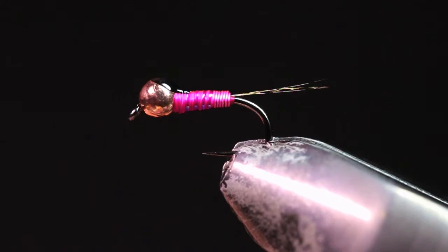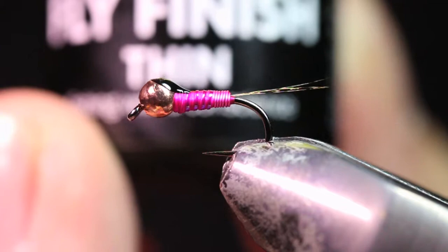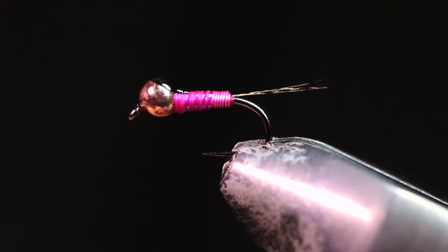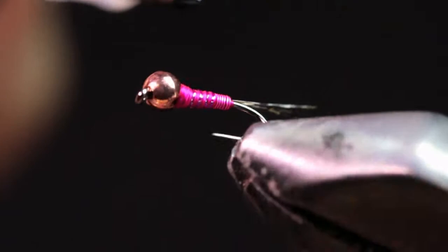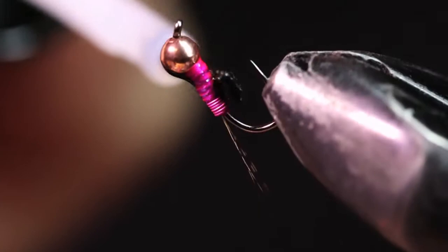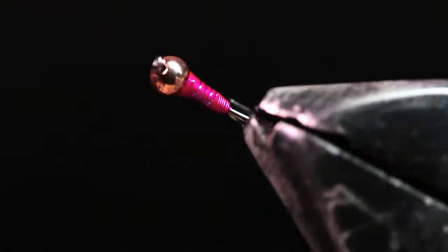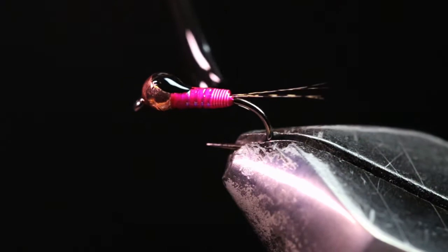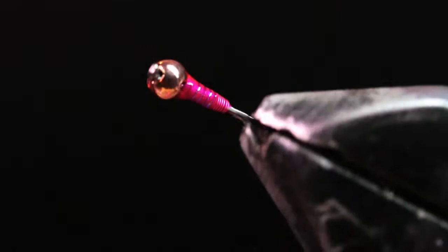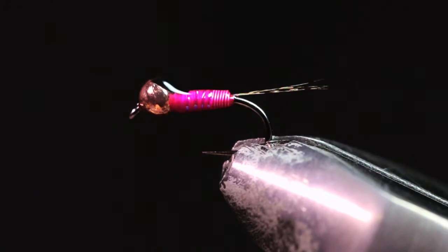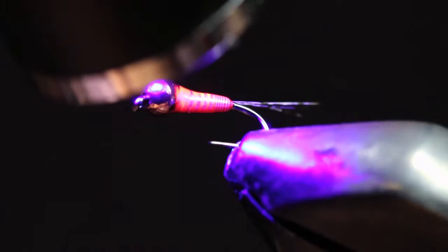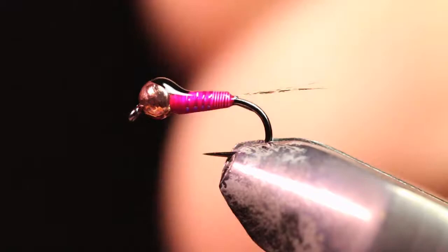So once your wing pad is dry, I like to get just a little bit of Loon Outdoors. This is the Thin. And I like to use this little applicator brush because it's super easy and most of my flies are pretty small. So I can just kind of just put it on just like so. You just want to coat this whole body and the pad. So this adds a little bit more durability to the whole fly. Now you can just grab your light, just hit this for about 10 to 15 seconds. Then you'll be good to fish.